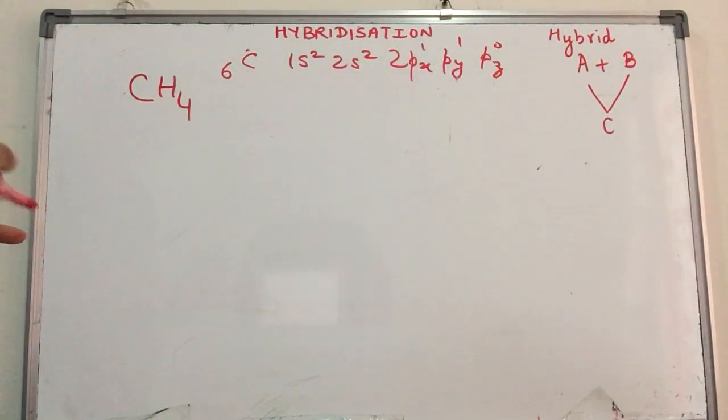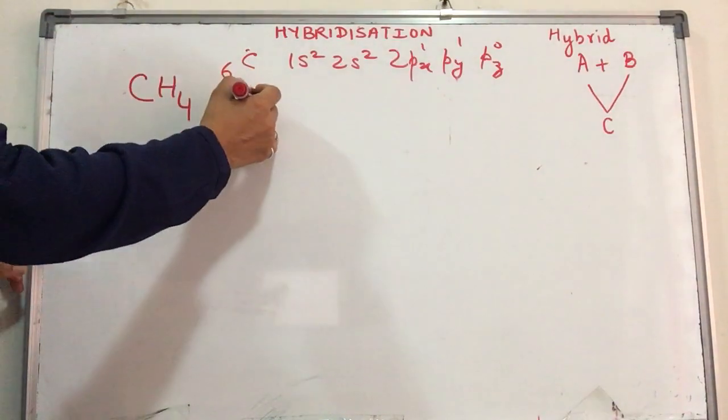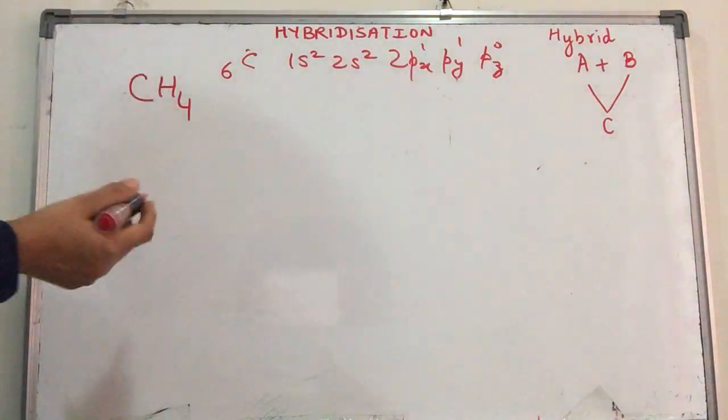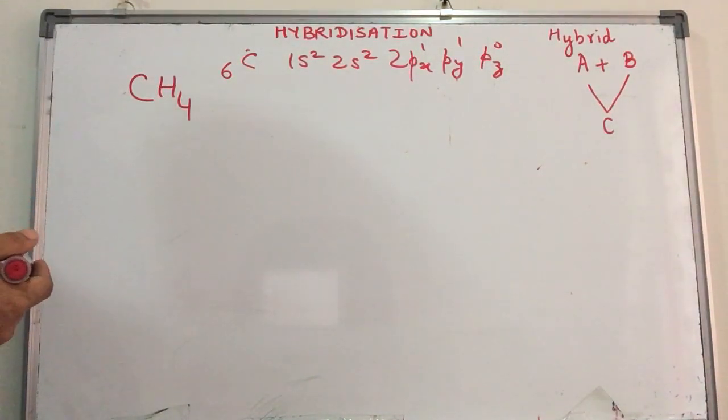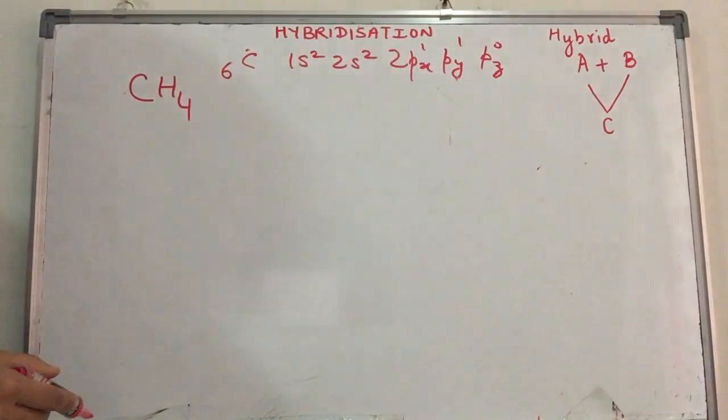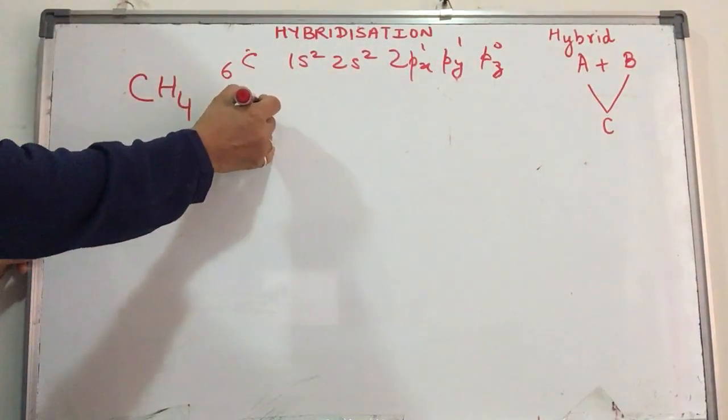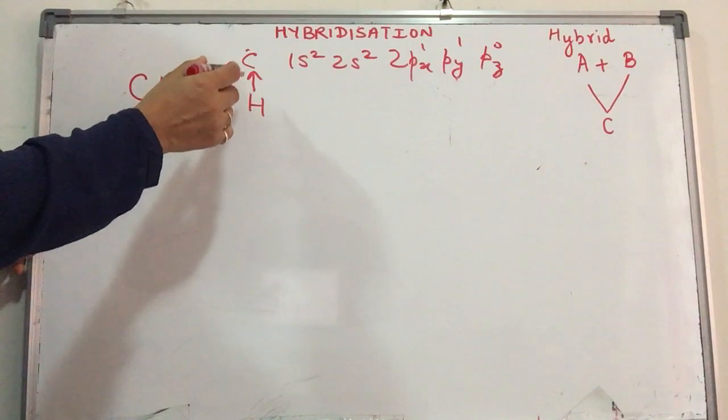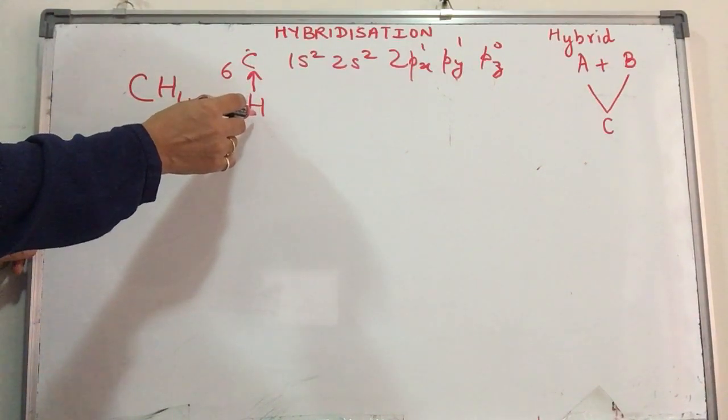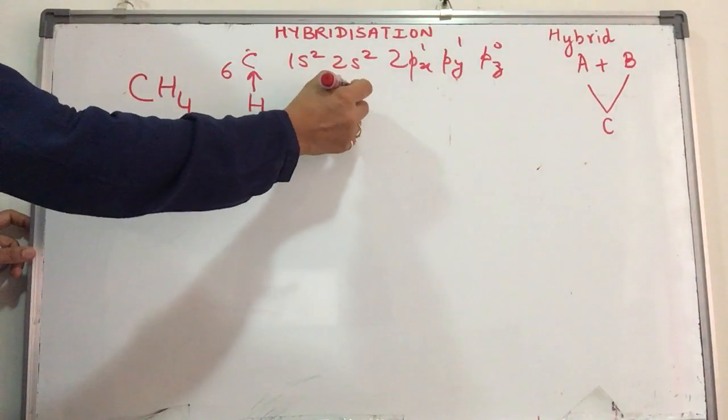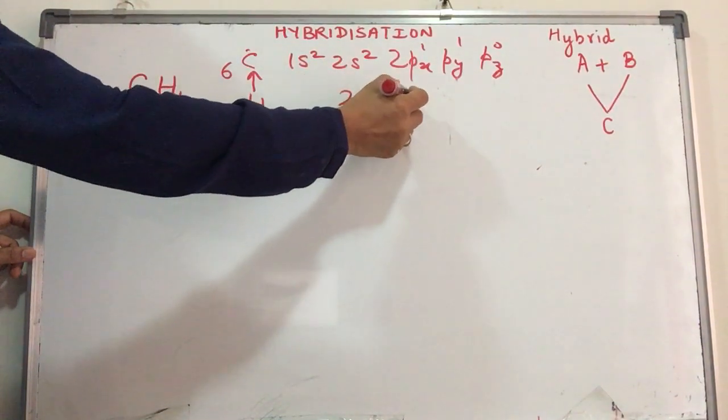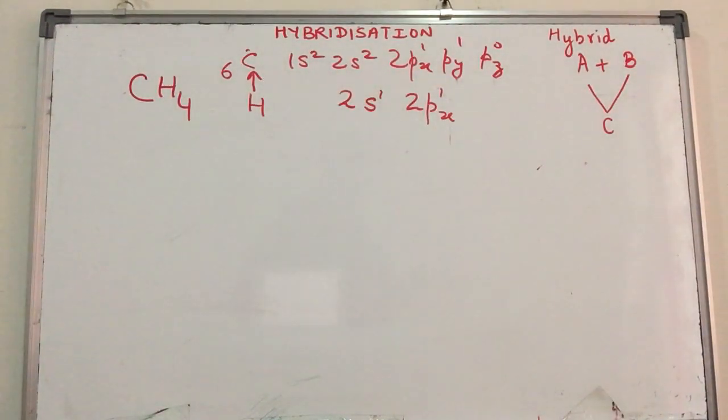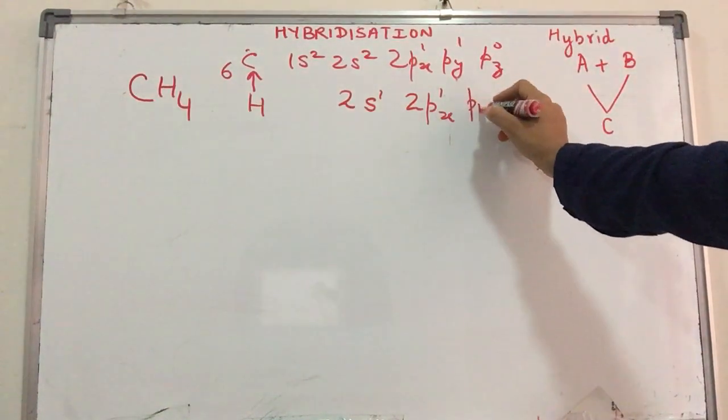This has to form four bonds with each of the hydrogen atoms. If we take it simply in terms of overlapping atomic orbitals, we would have only two bonds being formed. But when hydrogen approaches the carbon atom, forces of attraction come into play because of which the energy of the electrons changes.